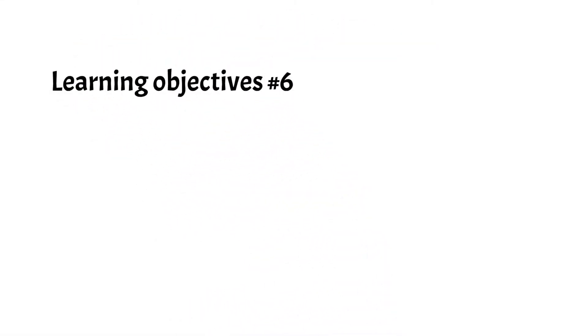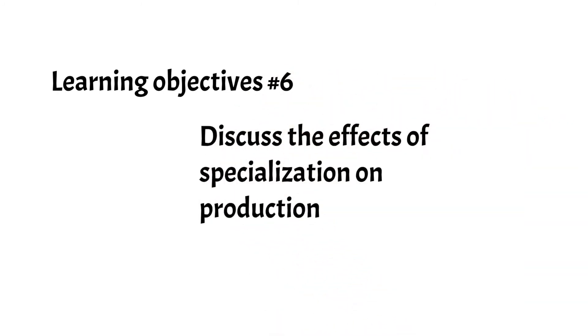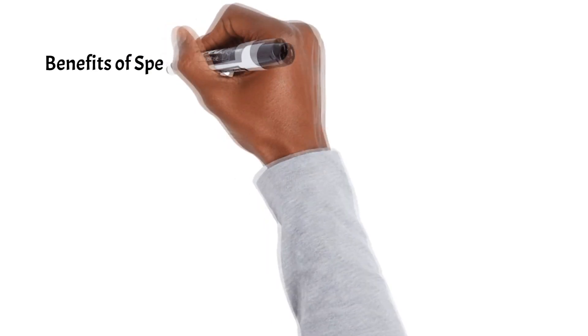The sixth learning objective is to discuss the effects of specialization on production. Specialization leads to greater economic efficiency and consumer benefits. Whenever a country has a comparative advantage in production it can benefit from specialization and trade. However, specialization can have both positive and negative effects on a nation's economy.